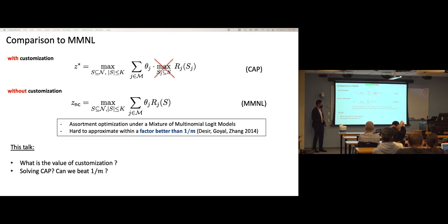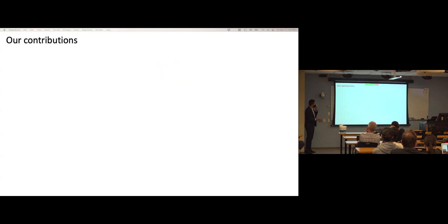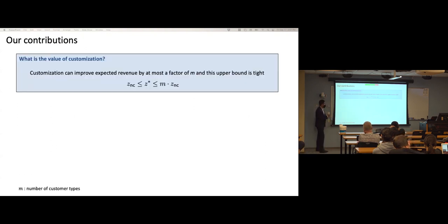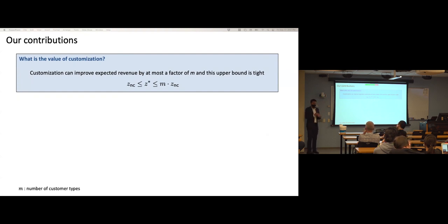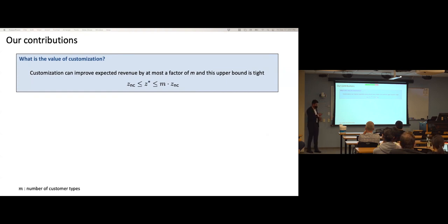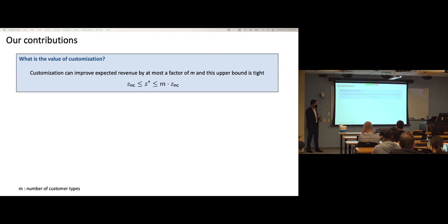We show that customization can improve expected revenue by at most a factor of m, and this upper bound is tight — we construct a family of instances where the gap between the problem with and without customization scales linearly with m. So customization can significantly improve revenue.